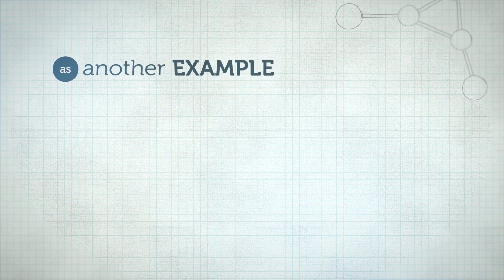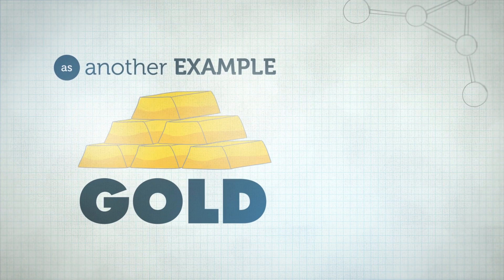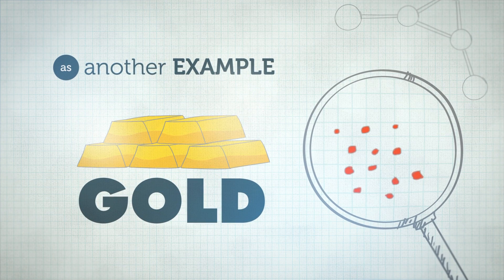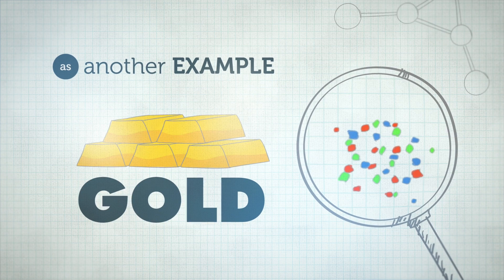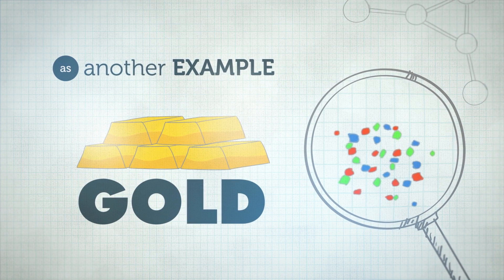As another example, we take gold. Gold on the nanoscale doesn't look gold at all—it's either red, blue, or green depending on the size and shape of the particles.